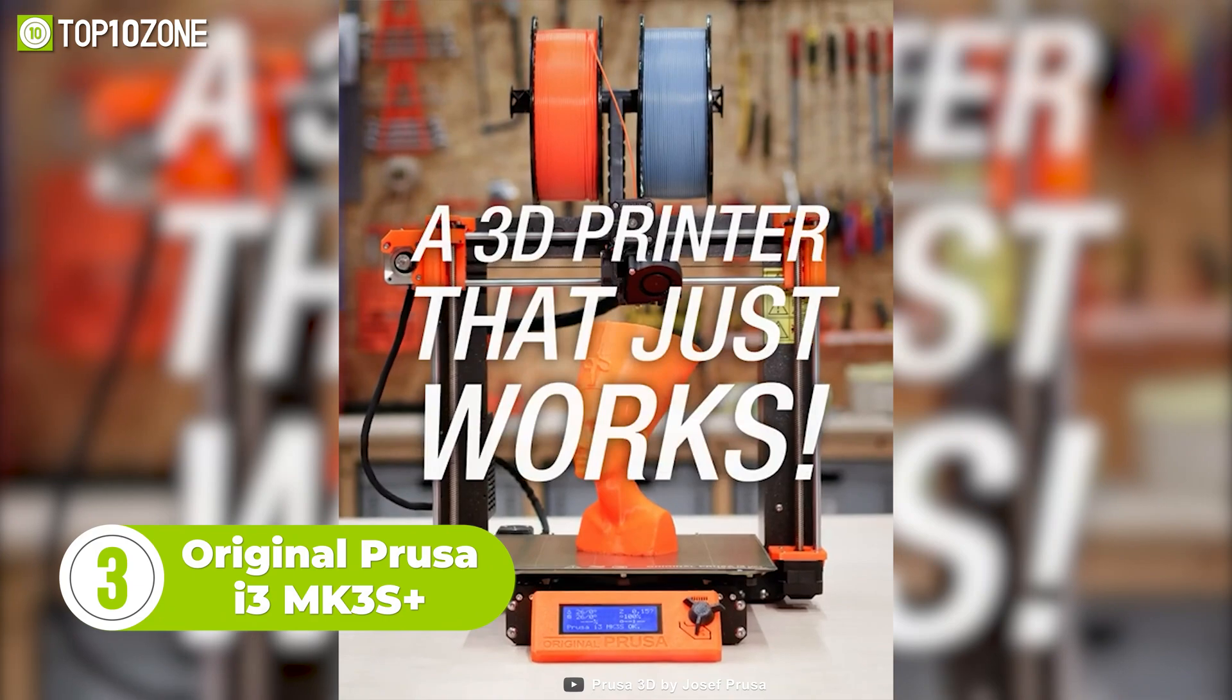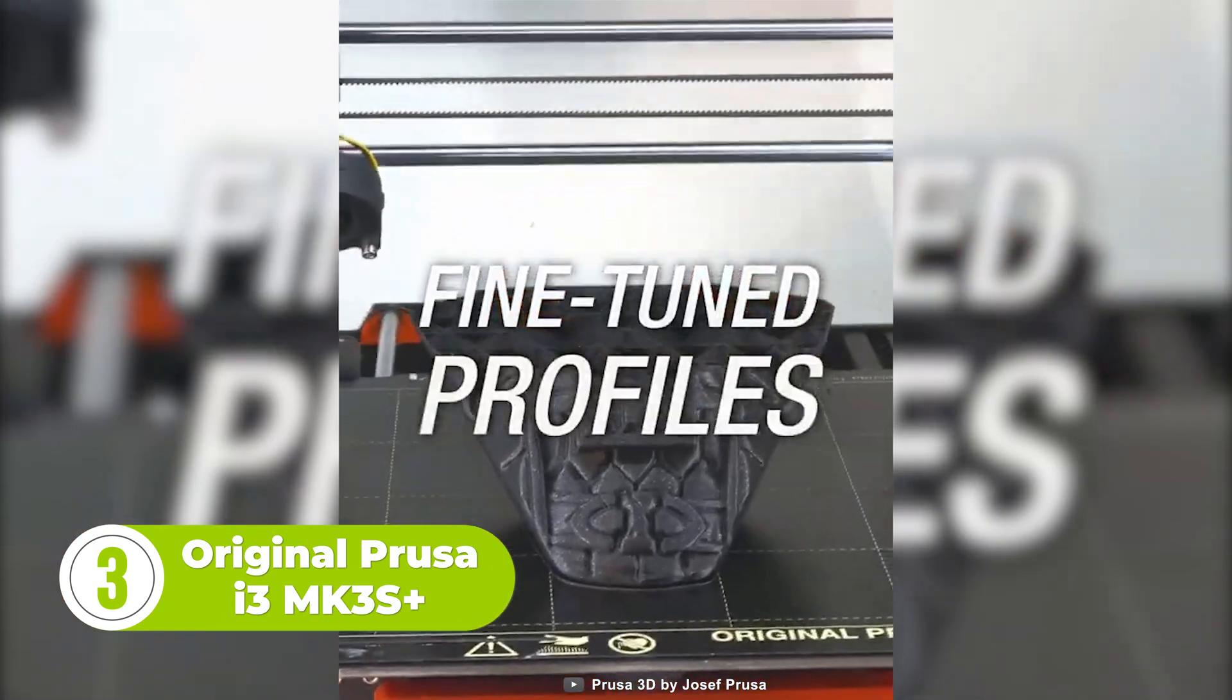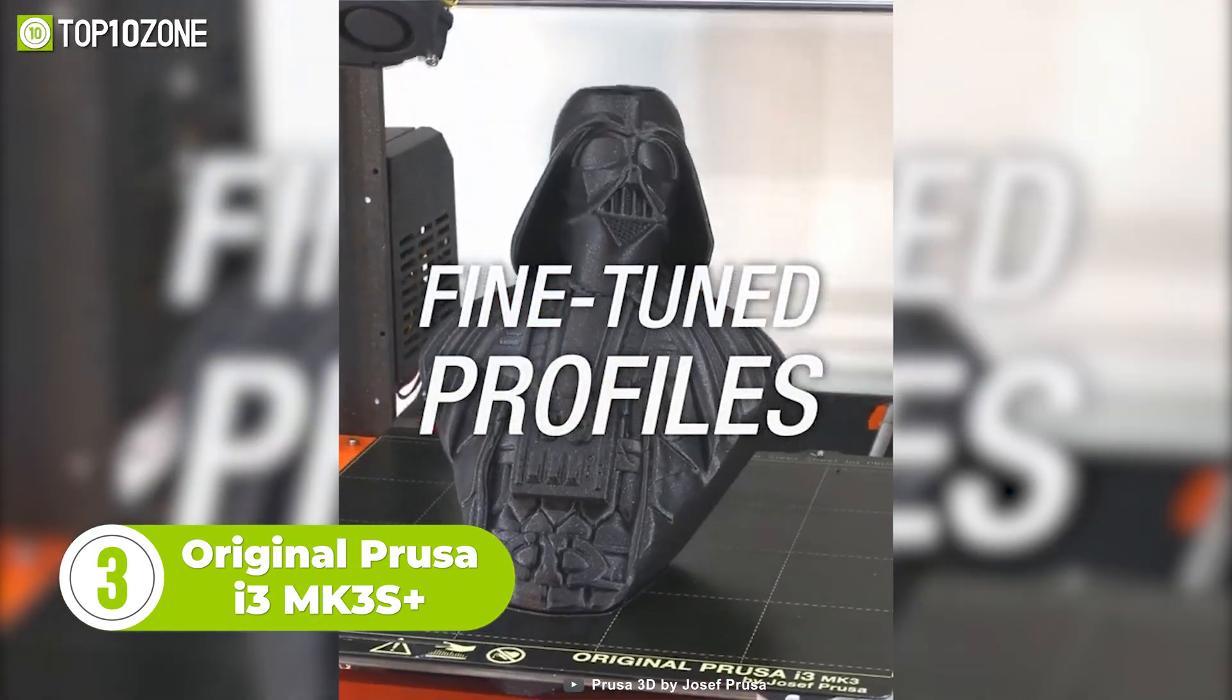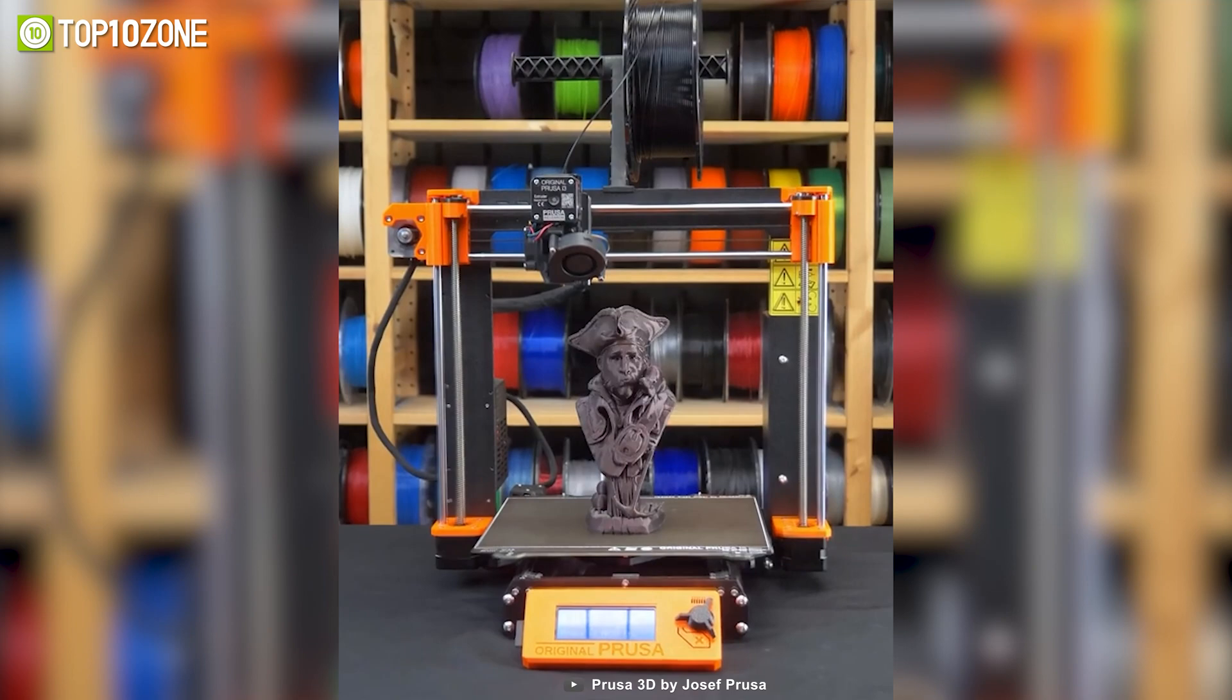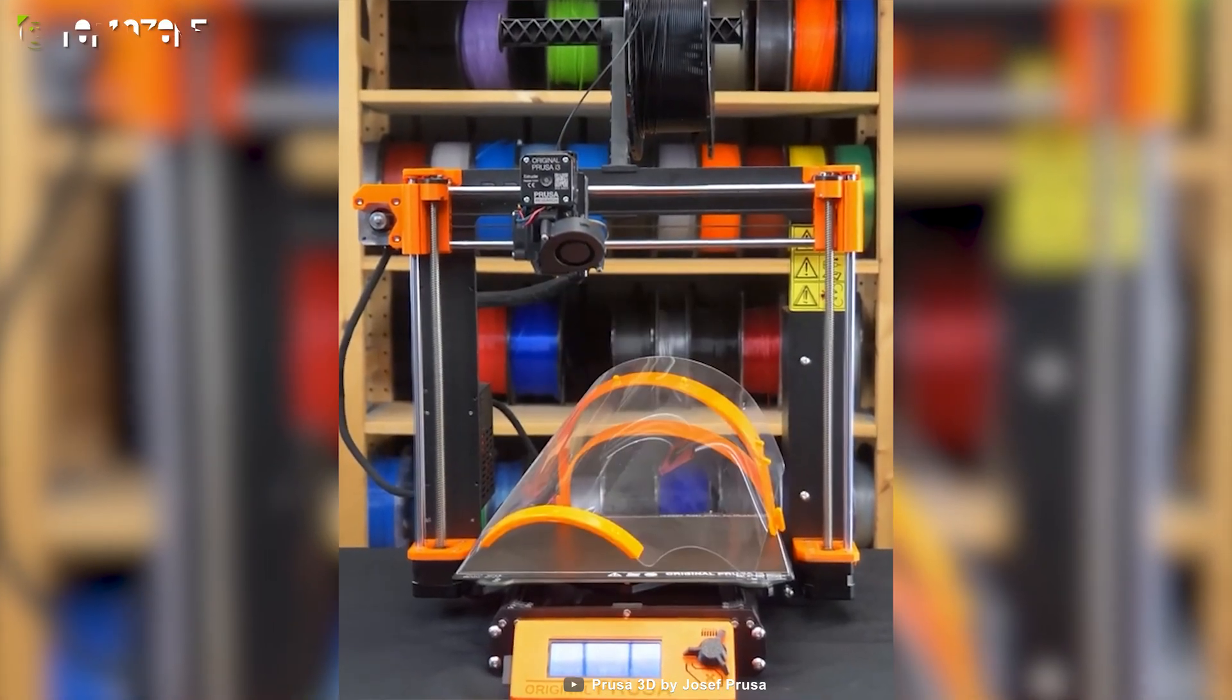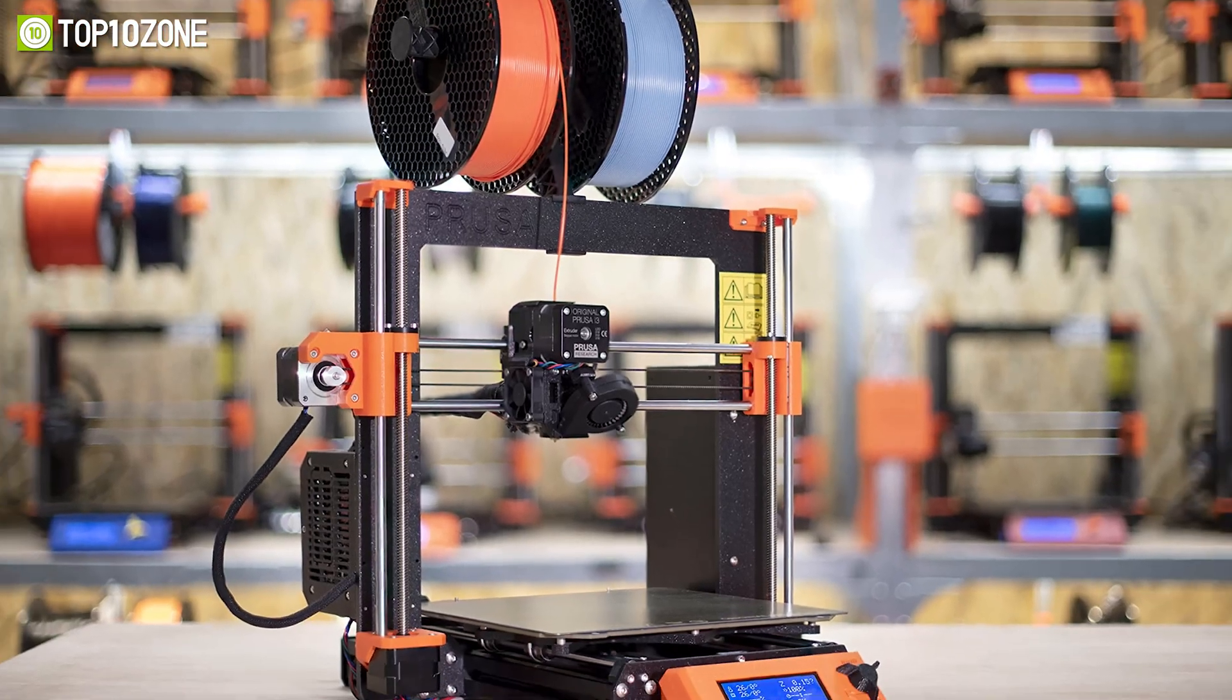Silent, reliable, and powerful, the original Prusa i3 MK3S Plus is a 3D printing workhorse perfect for both hobbyists and professionals. This model can use the mesh bed leveling process to compensate for microscopic imperfections, achieving great-looking layers.